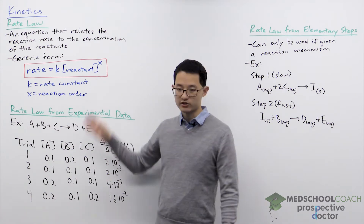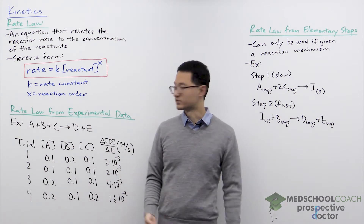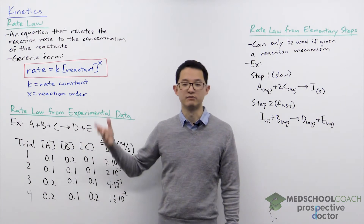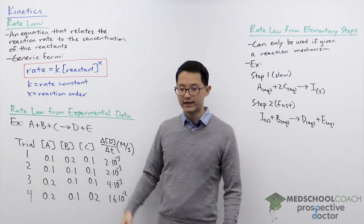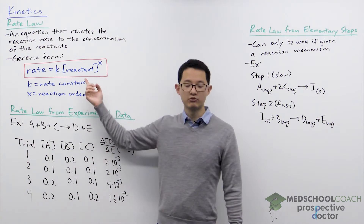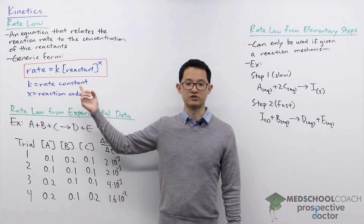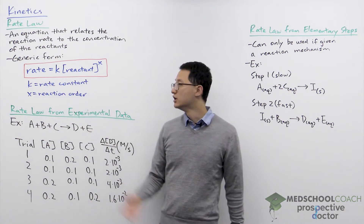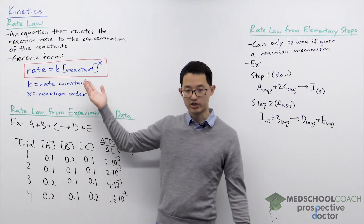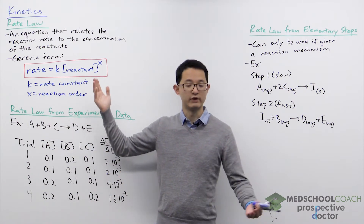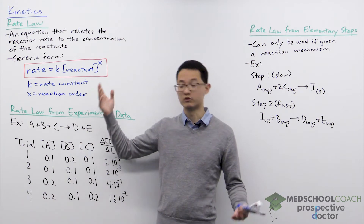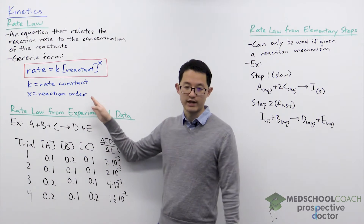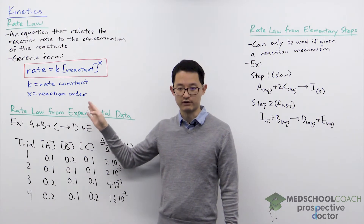The reaction order can be different numbers — it could be zero, one, or two. That tells you: if you doubled the reactant concentrations, how will the reaction rate respond? Will it not change? Will it double? Will it quadruple? That's what the reaction order tells us.